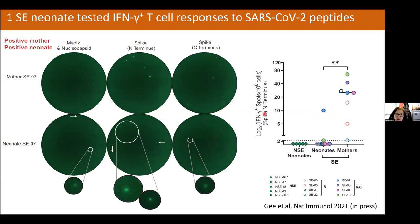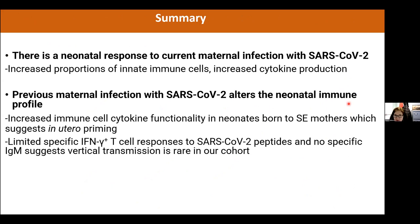Across our infant cohort, mothers had positive SARS-CoV-2-specific interferon gamma responses; babies generally did not — apart from one infant who did show interferon gamma-producing T cells responding specifically to SARS-CoV-2 peptides. That infant was born to a particularly sick mother who had placental abruption, suggesting how vertical transmission may have occurred in that case. Babies never exposed to COVID also had no specific SARS-CoV-2 responses.